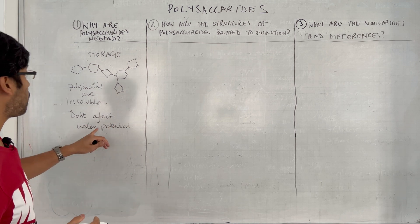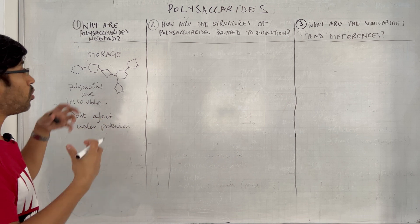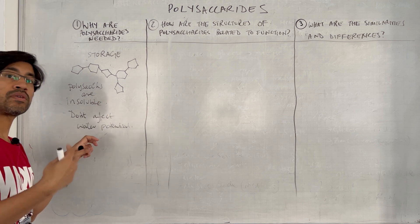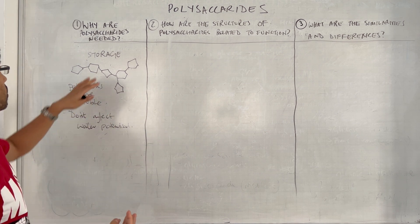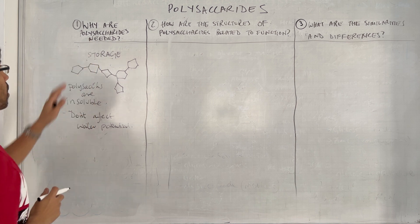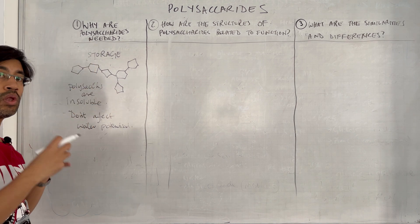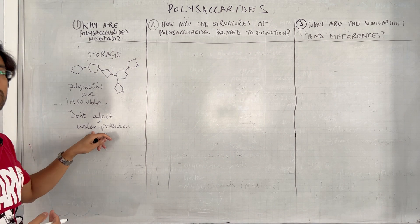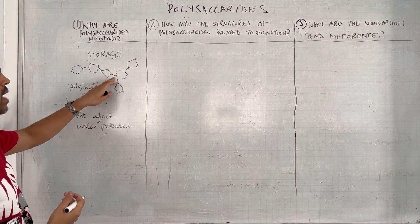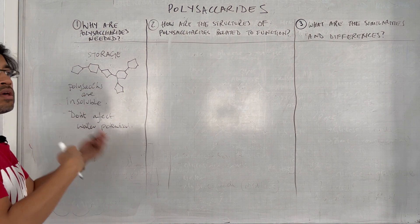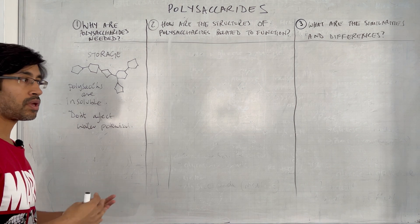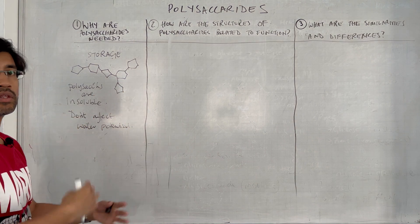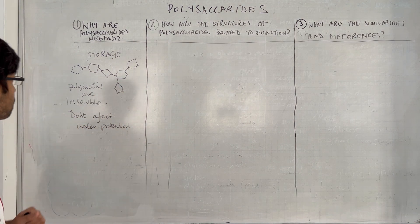That means we can store lots more glucose in the cell because it's not going to cause the cell to burst. The real importance of polysaccharides is they are a way to store lots of important monosaccharides in an insoluble form that doesn't affect water potential. The cell can then have lots of glucose available — as much as is needed to give the cell enough respiratory fuel to carry out its other processes.